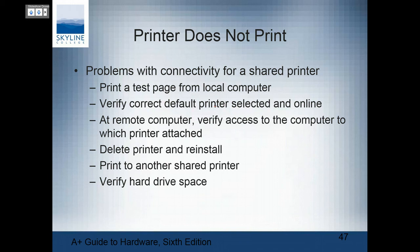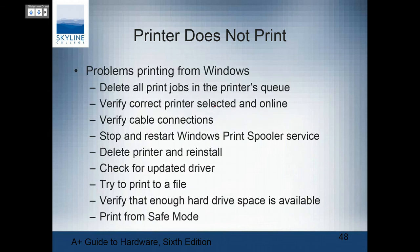For shared printers: print a test page from a local computer. Check the default printer is selected and online. Some things can be fixed simply by turning it off and back on, or restarting the spooler. The last step: delete and reinstall. If you have a single print job problem, it's the active job in the queue — you can delete it, pause it, or move it up and down in priority. Delete all the print jobs only as a last step because everybody has to resend. Then start and restart the spooler, delete the printer and reinstall it, and check for updated drivers.